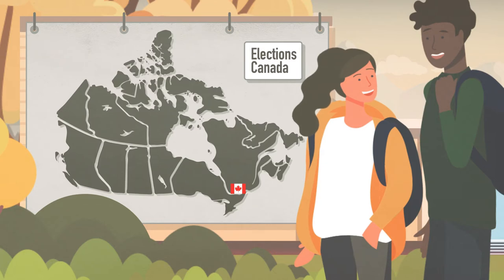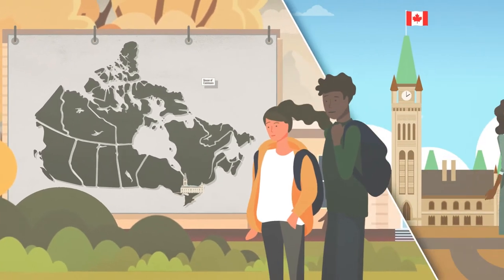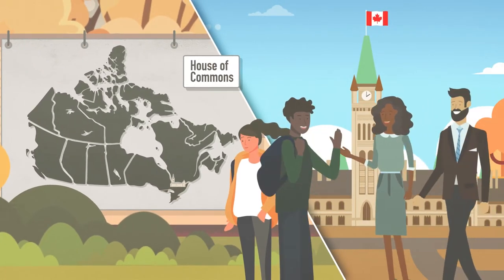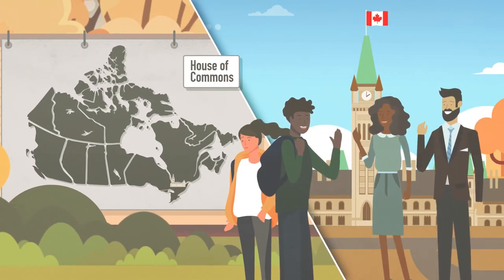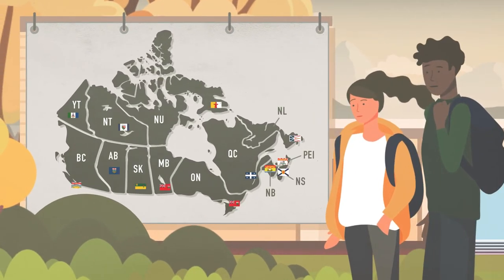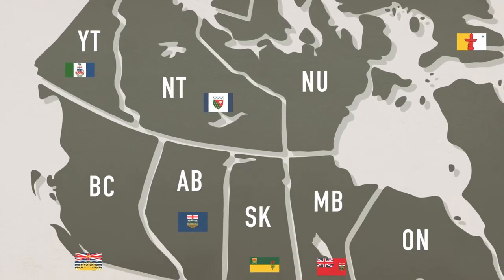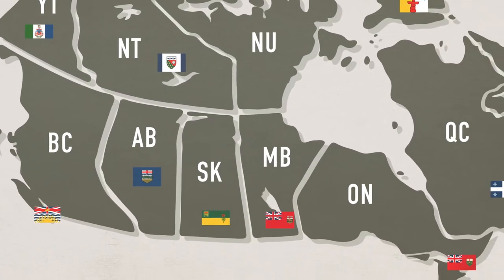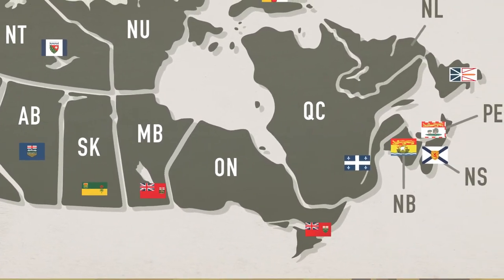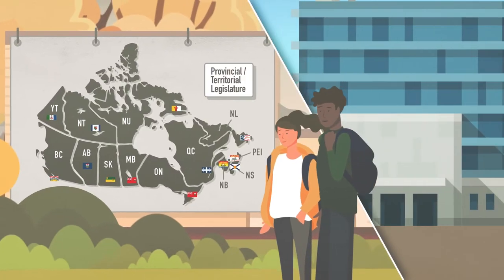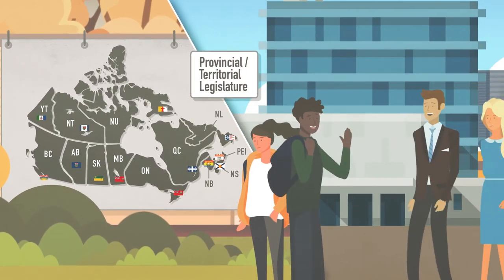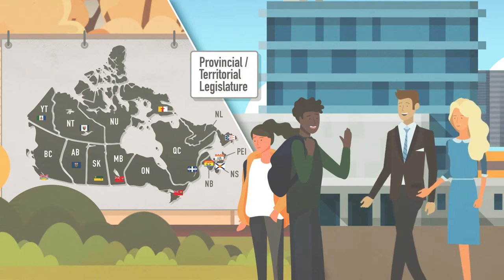In a federal election, you vote for someone to represent you in the House of Commons in Ottawa. At the provincial level, each province and territory has its own agency to run elections. Here, you vote for someone to represent you in your provincial or territorial legislature.